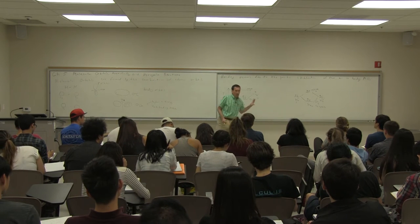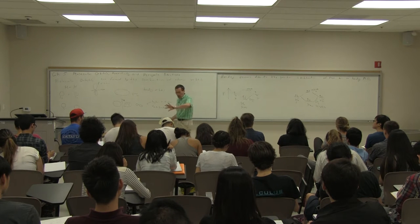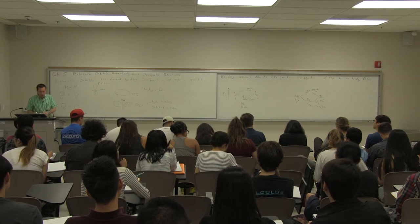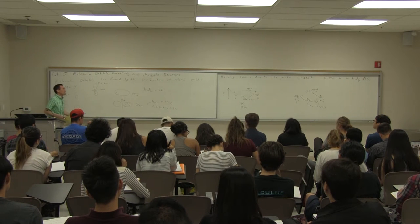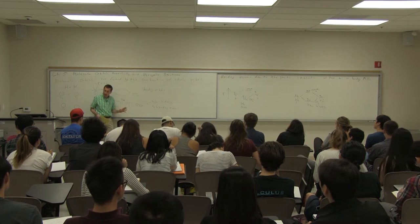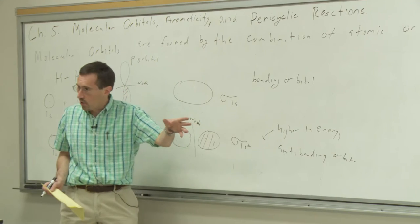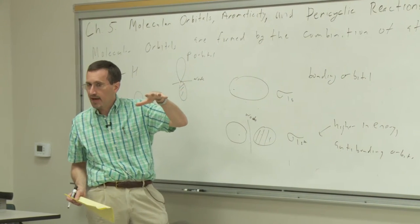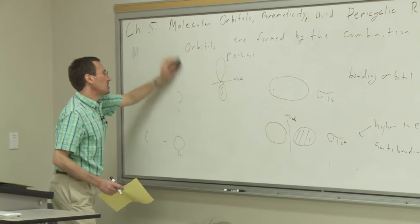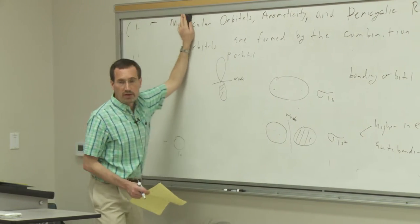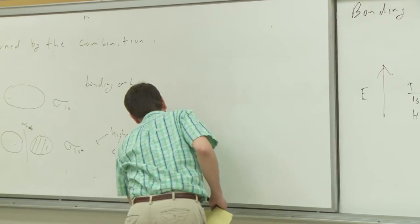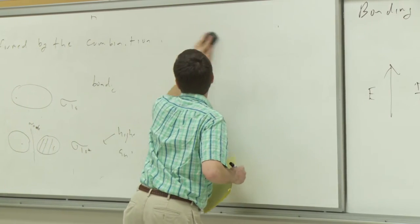What this is setting us up for is the notion of what makes for bonding. Now the last thing I need to do to set the stage for pericyclic reactions and cycloadditions is to bring us to pi orbitals. We've made sigma orbitals — sigma orbitals are axially symmetric. When we mix p orbitals that are suitably oriented, we can get pi orbitals, and pi orbitals are generally separate from the sigma orbitals.